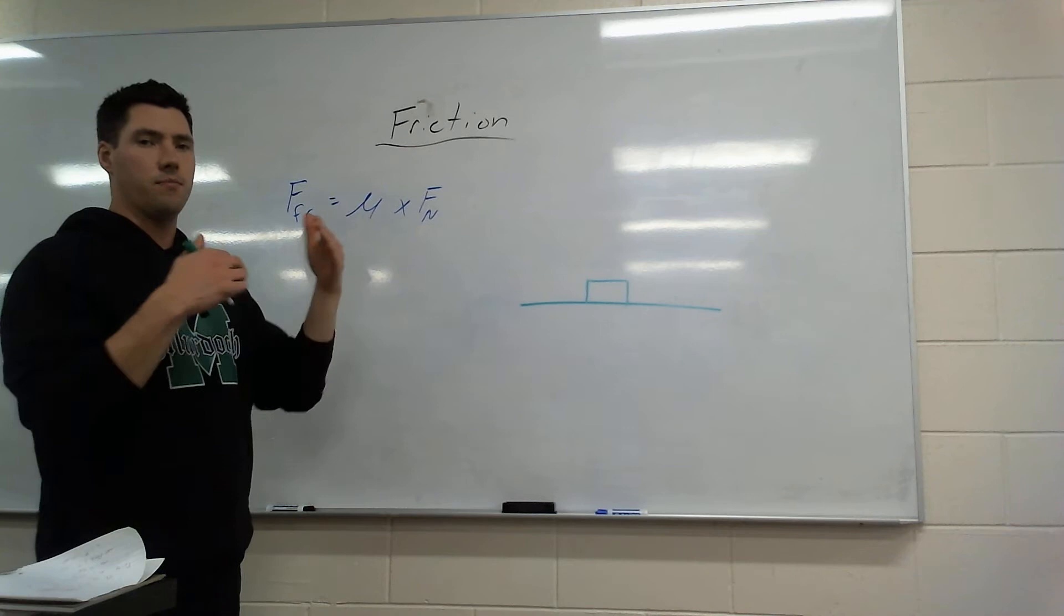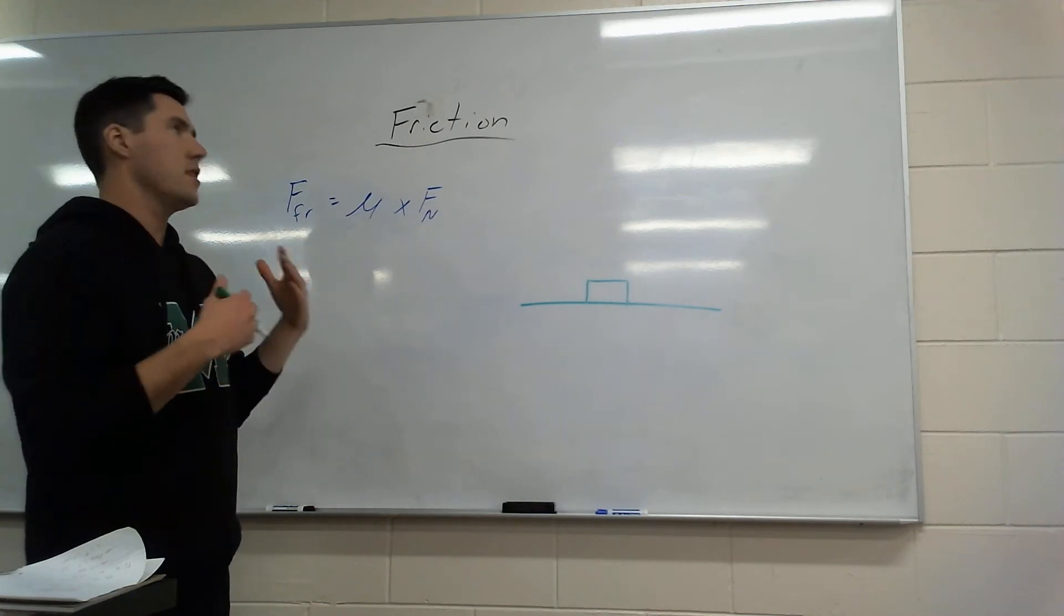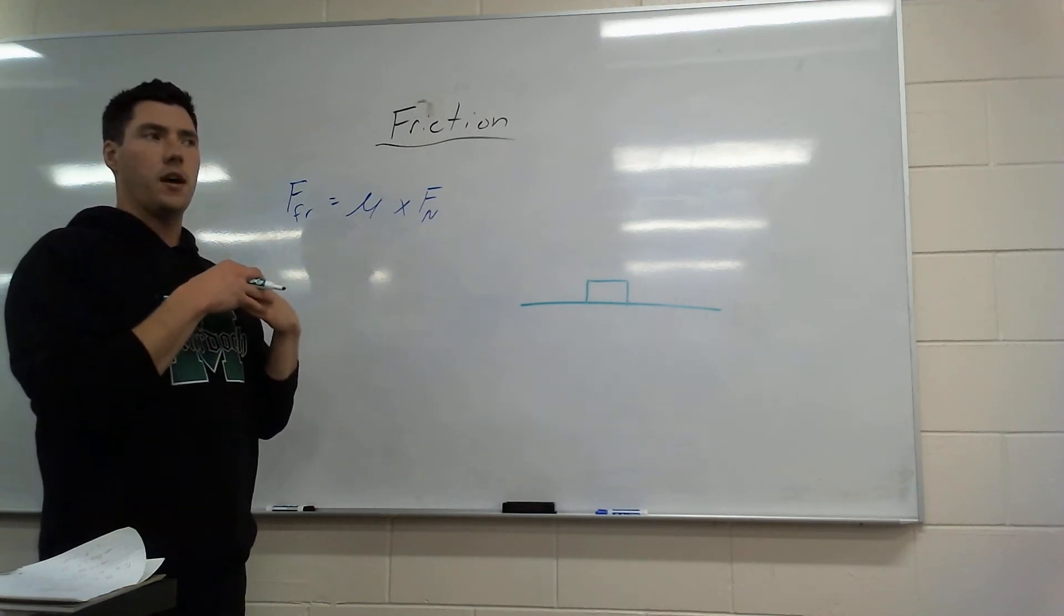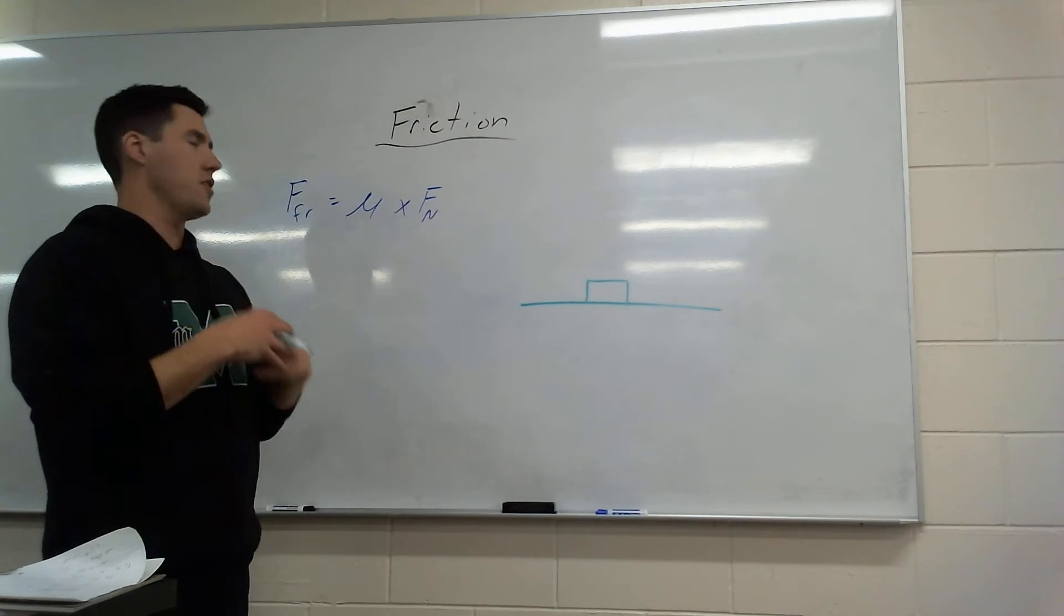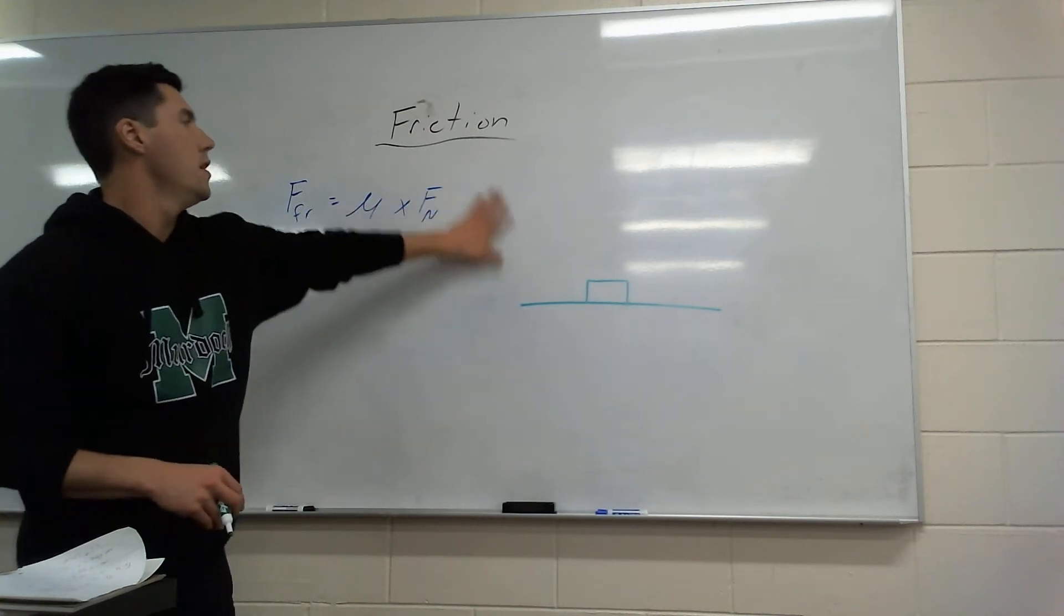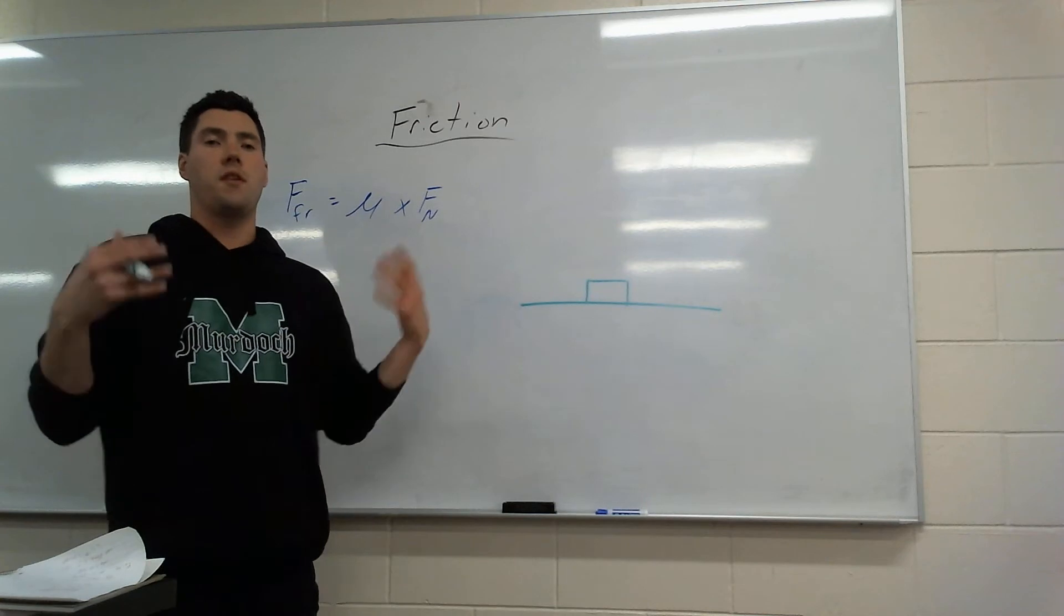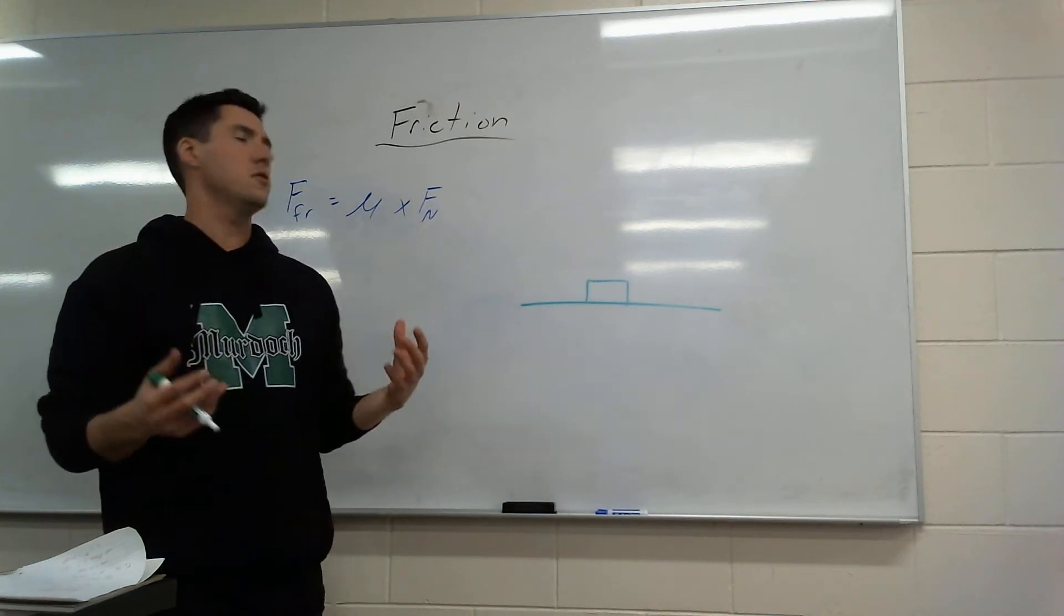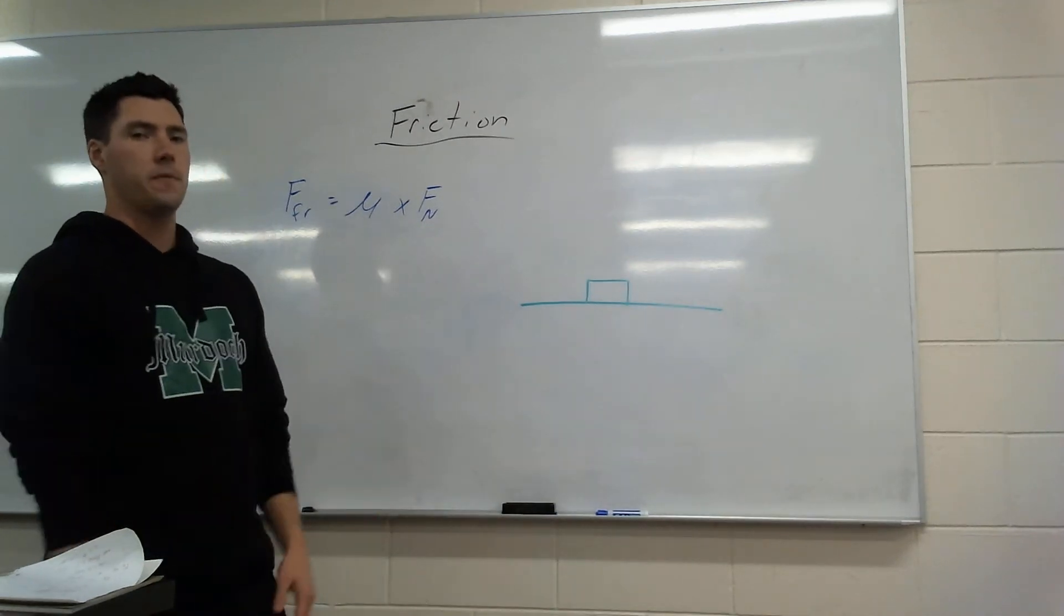But it is our coefficient friction, that percentage or decimal that's going to tell us how much it's slowing down. And then force normal - what is force normal? It's just that force that's holding something up on a table. It's usually basically just mass times gravity.